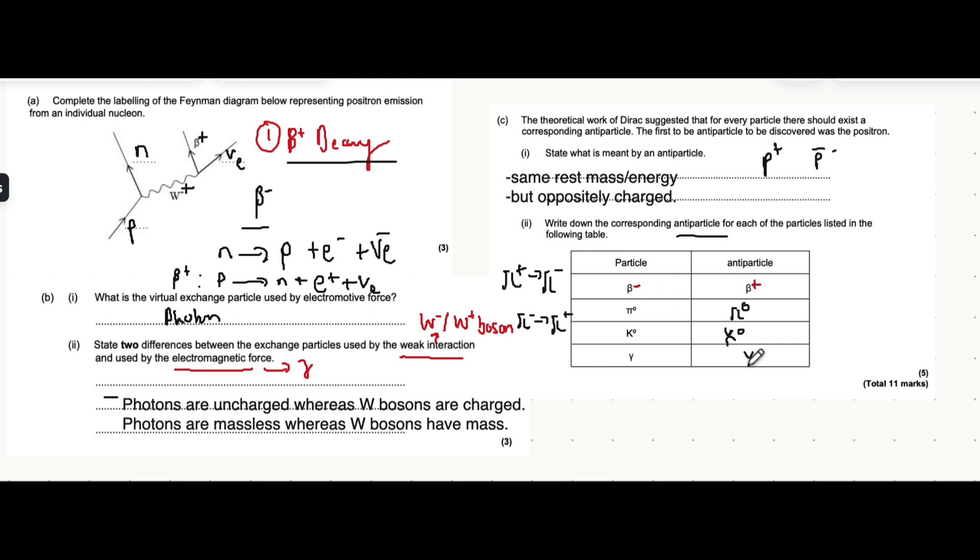Because that satisfies the definition, that they have the same rest energy, or same rest mass, and they're oppositely charged. The opposite of a neutral charge is zero. A photon is also uncharged. So the opposite charge of that is also zero. Hopefully that makes sense.